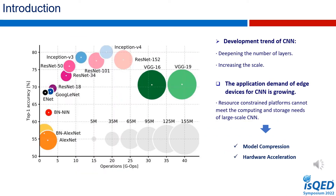Nowadays, the application demand of edge devices for CNN is growing. But deep neural networks occupy a lot of computational and storage resource overhead. In order to enable large-scale CNN to meet the real-time requirements on resource-constrained embedded devices, researchers have made great efforts in model compression and hardware acceleration.